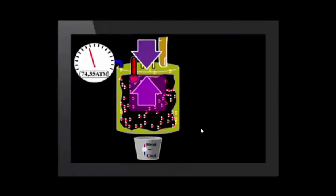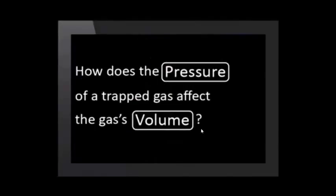So, we could take pressure as our independent variable and volume as our dependent variable. Then our focus question is, how does the pressure exerted on the trapped gas affect the gas's volume? Notice that the pressure exerted by the gas is the same as the pressure exerted on the gas when the container is still.